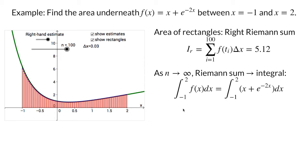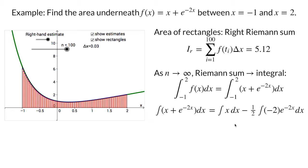The area under the function f of x for x between negative 1 and 2 is therefore the integral from negative 1 to 2 of f of x dx, which, since our function f of x is x plus e to the negative 2x, is the integral from negative 1 to 2 of x plus e to the negative 2x dx. We can now jettison our Riemann sums and instead use the fundamental theorem of calculus to calculate the area given by the definite integral. To start, we calculate the indefinite integral, or antiderivative.